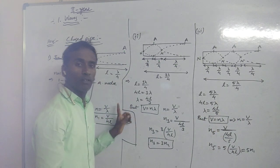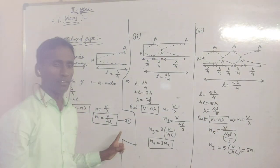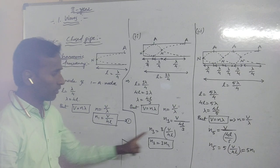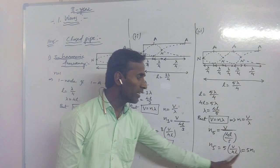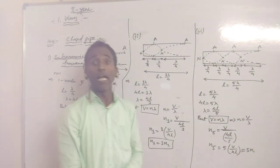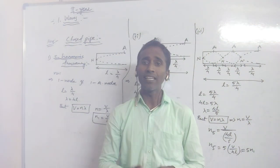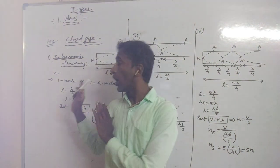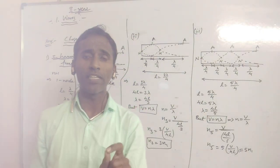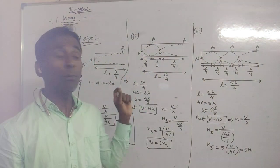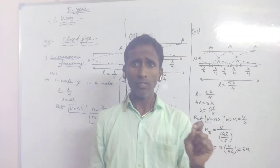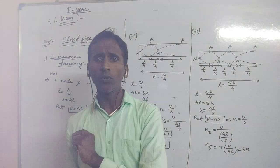From equation 1, since N1 equals V by 4L, we can write N5 equals 5·N1. This is the fifth harmonic frequency formula. Along with this topic, there will definitely be a problem which I will teach in the next video.